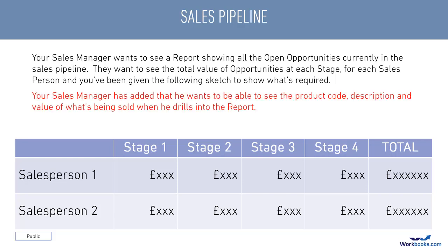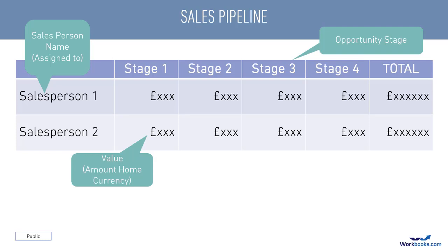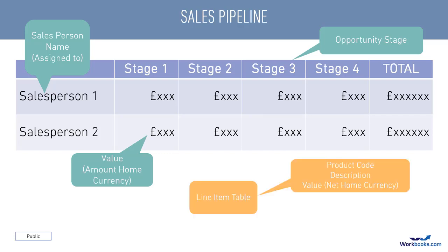But the sales manager has now said that when they drill into the report they want to see the details about the line items being sold. This means that we need to amend the details report so that in addition to it showing the Assign To field, the amount from the header and the opportunity stage, it also needs to show the product code, the description and the net home currency field - all of which are held on line items - so we'll need to join the two together.